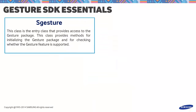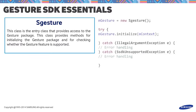Let's talk about two main classes for the Gesture SDK. The first is SGesture, the entry class that provides access to the gesture package. This class provides methods for initializing the gesture package and for checking whether the gesture feature is supported. To initialize SGesture, refer to the code displayed on the screen. You can use the IllegalArgumentException to resolve issues pertaining to null listeners or invalid types, which may correspond to the start and isFeatureEnabled methods.